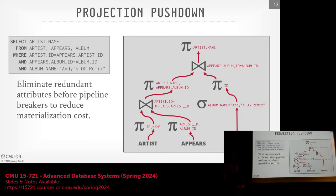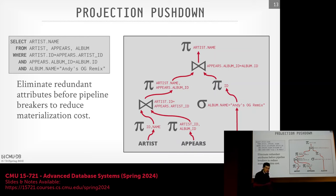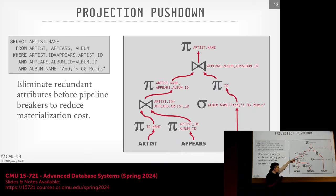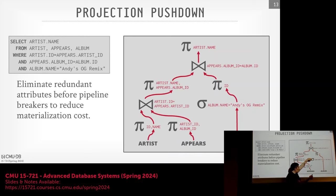There are actually some edge cases where if the predicate is very expensive computationally, pushing it down is a bad idea. Because how do you weigh the number of tuples going into the filter versus the cost of applying it for everyone below versus above after the join? You need a cost model. In the very beginning, they didn't have any of that.